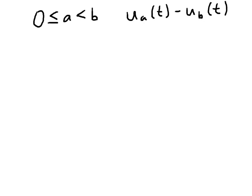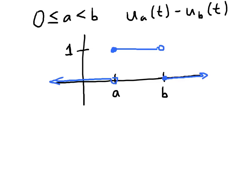So the graph of this function will look like this. It has value 0 until we reach a at which point it jumps up to value 1 until we get to b where it drops back down to 0. So this type of function is sometimes called a box function.